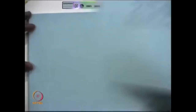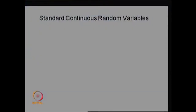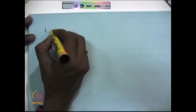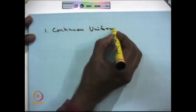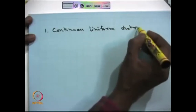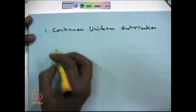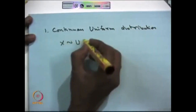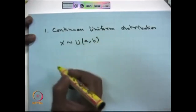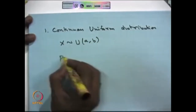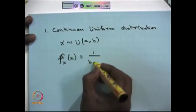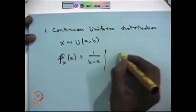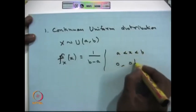Next we are moving into continuous random variables. The first continuous random variable is the continuous uniform distribution. When we say the random variable X is continuous uniformly distributed between the interval a to b, the probability density function is 1/(b-a) between the interval a to b, and 0 otherwise.